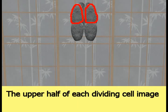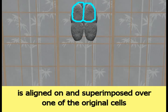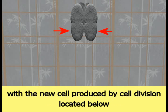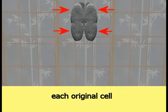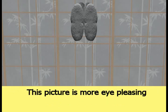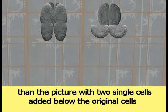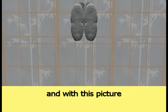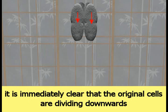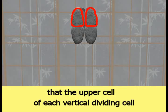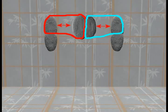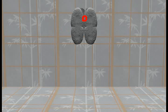To make the downward cell division idea more clear and eye-pleasing, the new cells are replaced by two vertically oriented dividing cell images. The upper half of each dividing cell image is aligned on and superimposed over one of the original cells, with the new cell produced by cell division located below each original cell. It is extremely important to keep in mind that the upper cell of each vertical dividing cell represents one of the two original cells. The original dividing cells remain partially connected to each other, and the two new cells below are also still partially connected to the parent cells.